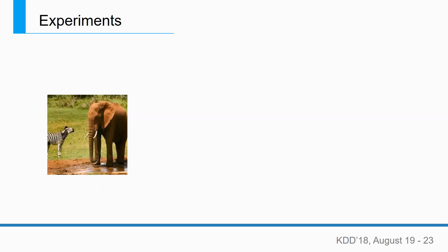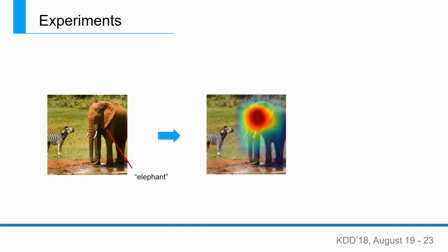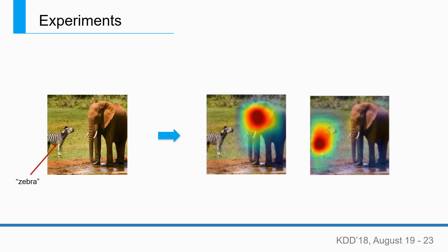In addition, when the input has multiple foreground objects, our method could distinguish different classes, showing high class discriminability.